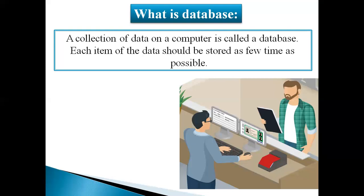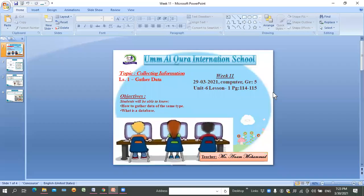For example, when you go to a restaurant or reserve a hotel room, you reserve it online by entering your data. When you arrive at the hotel, you just provide your number and the information they need — your name, picture, age — and all the data automatically appears on their computer. This is an example of a database. So this is our lesson. I hope you all understand what data is and what a database is. If you have questions, you can ask me. Thank you.